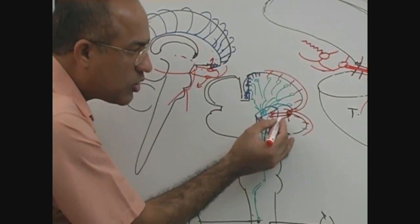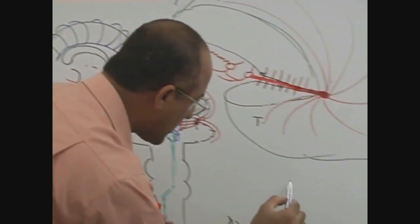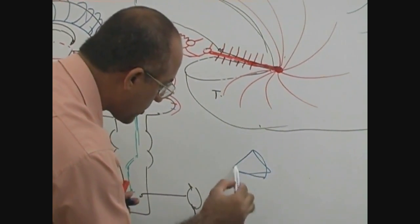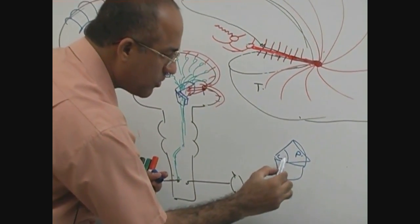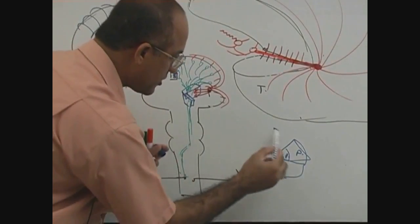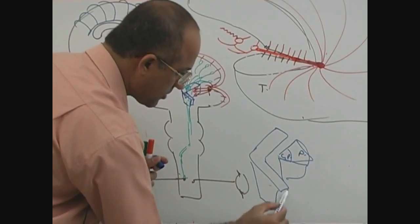These are lenticostriatal branches because if you really want to know this structure, here is your... which nucleus? Do you recognize it? Putamen, globus pallidus, and here is your internal capsule.